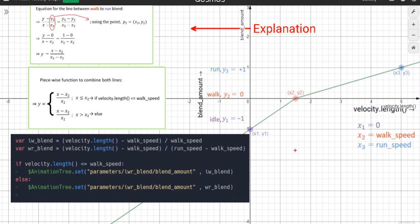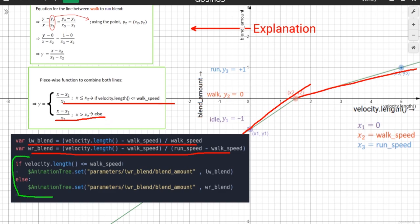So in the code, I'm going to implement this piecewise function, iwblend being the straight line from idle to walk and wrblend being the straight line from walk to run. And here I'm going to set the blend amount accordingly. If the velocity length is less than or equal to the walk speed, the blend value will follow the first line, else it would follow the second line.